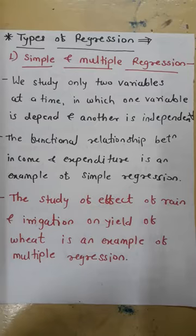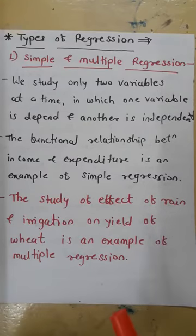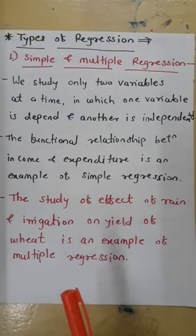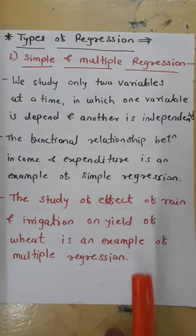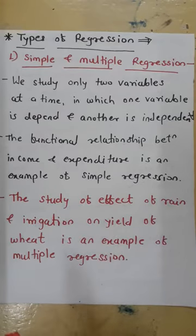In simple regression, one variable is found to be dependent and another independent. The functional relationship between income and expenditure is an example of simple regression.